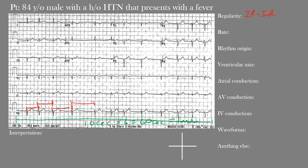Counting across the strip: 1, 2, 3, 4, 5, 6, 7, 8, 9, 10, 11, 12. So 12 complexes times 6 equals 72 beats per minute. The EKG machine also gave the same rate — 72 beats per minute — showing how this method gives a really good estimate. In this case it was exactly the same as the machine.